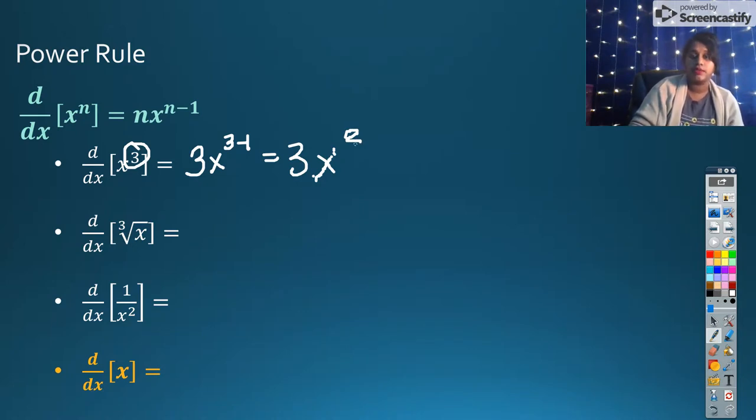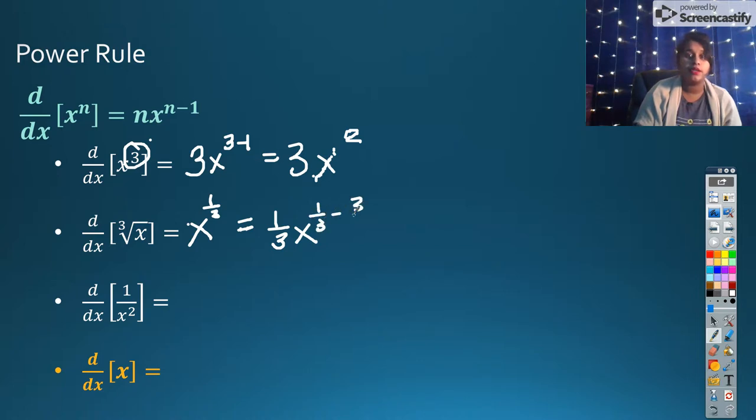Now our second example is a little different because as of right now, it doesn't quite look like a power function. But if you recall from algebra two, our exponential properties actually tells me that all radicals are exponents. So I can rewrite that as x to the one third. If you're struggling with that, please come see me. That is an old property and you should know this by now. So I'm going to take that for its derivative and that's going to become my exponent brings to the front and I'm going to subtract one, which we know is actually the form of three over three since we have a fraction. So this becomes one third x to the negative two thirds.